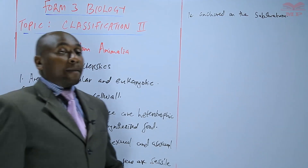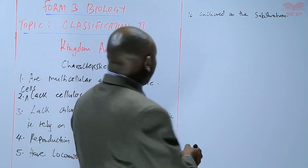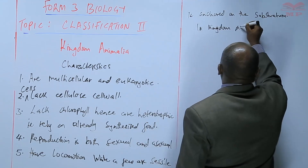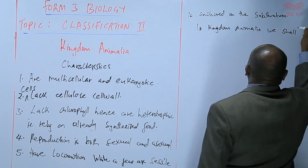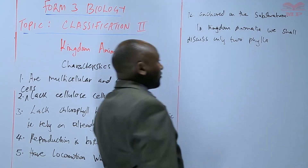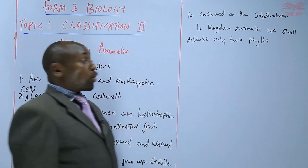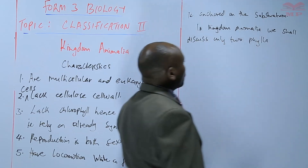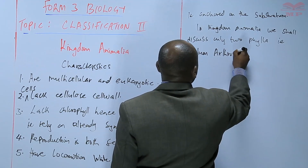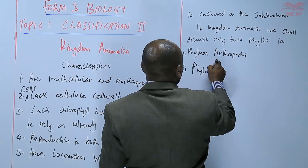In Kingdom Animalia, we are going to discuss two main phyla: Phylum Arthropoda and Phylum Chordata. There are about nine phyla in total, but we are only required to discuss these two.